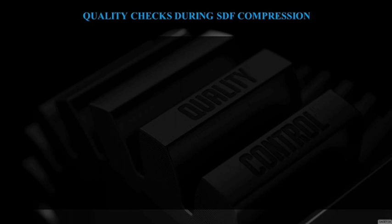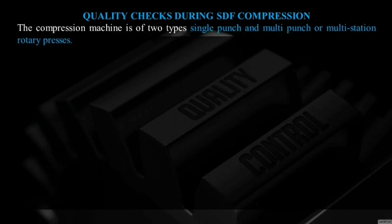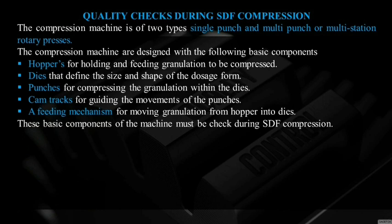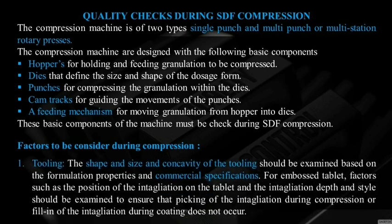Quality check during solid dosage form compression — tablets are prepared by compression of powder blend or granules. Compression machines are of two types: single punch and multi-punch or multi-station rotary press. The compression machine is designed with the following basic components: a hopper for holding and feeding the granulation; dies that define the size and shape of the dosage form; punches for compressing the granulation within the dies; cam tracks for guiding the movement of the punches; and a feeding mechanism for moving granulation from the hopper into the dies. These basic components must be checked during solid dosage form compression.